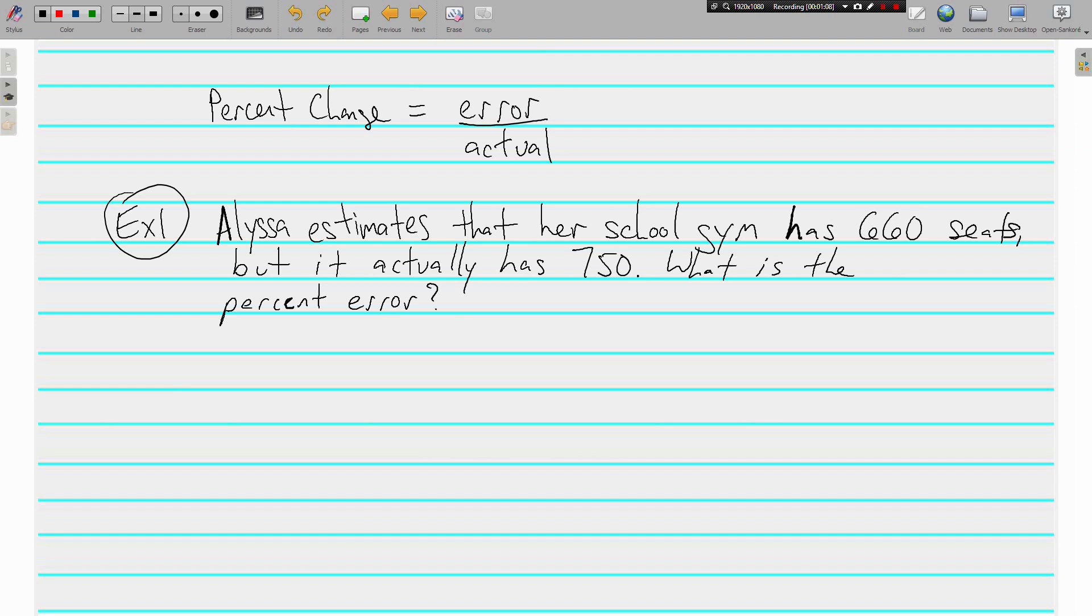Percent Error is what we are talking about. So she thought it had, she guessed, she estimated that it had 660, but it actually has 750. So the difference between those, 660 from 750, is 90.